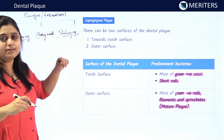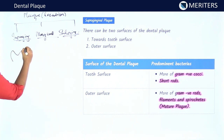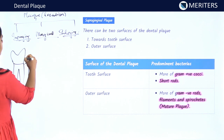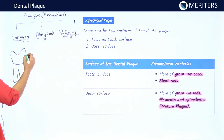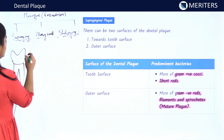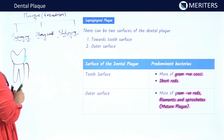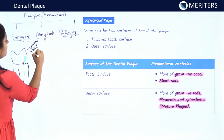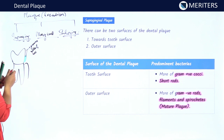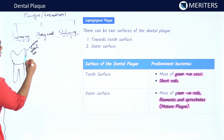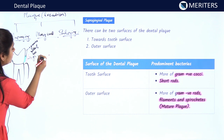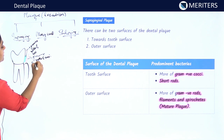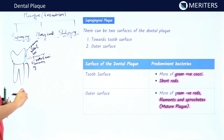Let us see the different microorganisms present in these plaques. In supra-gingival plaque, the plaque in direct contact with the tooth surface mainly consists of gram-positive cocci and rods. The plaque further out from the tooth surface also consists primarily of gram-positive rods and cocci, and filamentous organisms can also be seen in this part of the plaque.